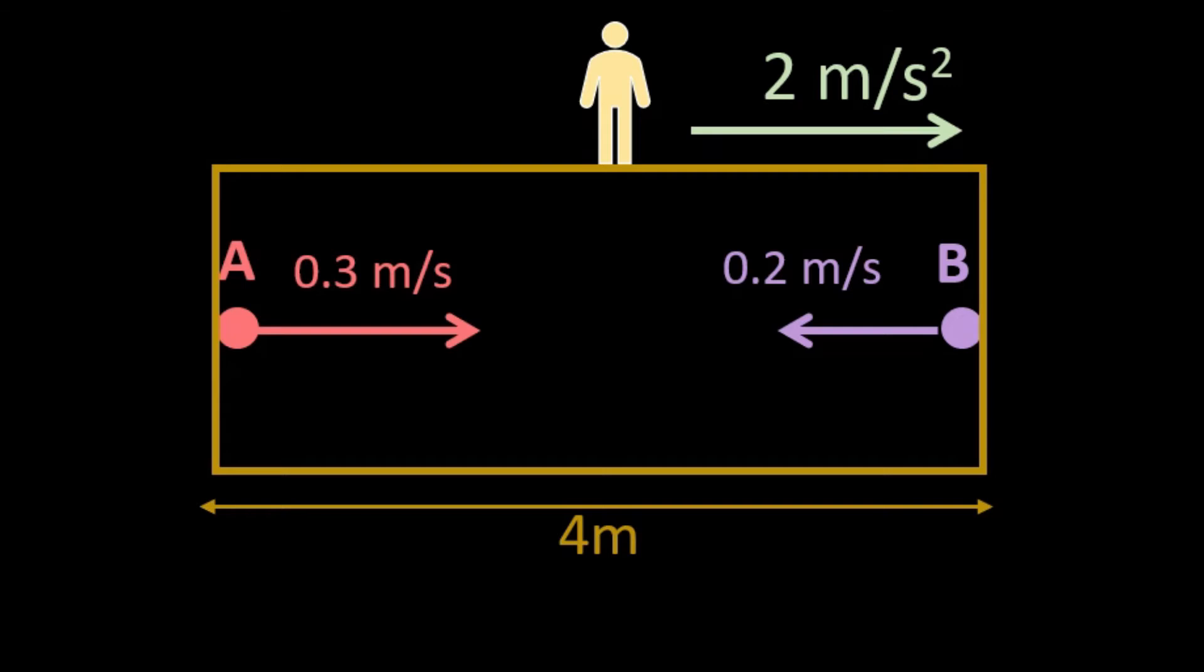If we want to see their acceleration with respect to the rocket, the acceleration of A will be 2 meters per second squared towards the left, and that of B will also be 2 meters per second squared towards the left, meaning towards the negative x-direction. The path of A will be a turning motion because the initial velocity and uniform acceleration are opposite. For particle B, initial velocity and uniform acceleration are in the same direction, so this will be a straight line motion without turning.